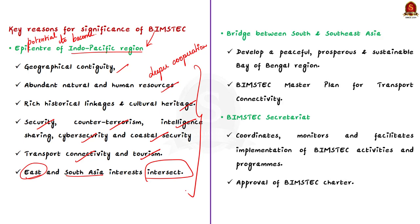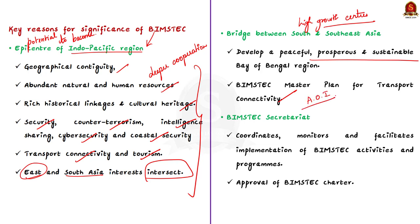The second reason is that BIMSTEC serves as a bridge between two major high-growth centers of Asia — South and Southeast Asia. This is essential to develop a peaceful, prosperous and sustainable Bay of Bengal region, and this can be achieved by the BIMSTEC Master Plan for Transport Connectivity. This transport connectivity plan can serve as a bridge between South and Southeast Asia.